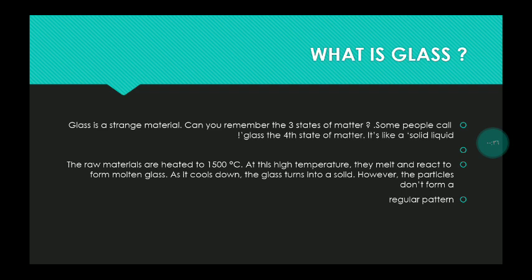What is glass? Glass is a strange material. Can you remember the three states of matter? Some people call glass the fourth state of matter — it's like a solid liquid.